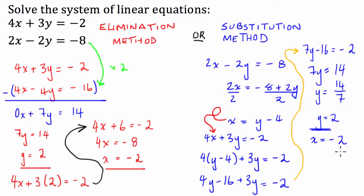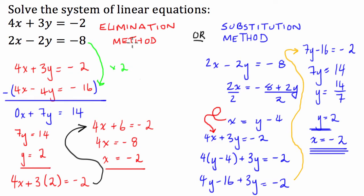So I've solved this set of linear equations using the two different methods first shown to us when we encounter simultaneous equations. We can either use the elimination method, where we eliminate one of the variables, or the substitution method, where we express one variable in terms of the other and substitute it into the second equation.